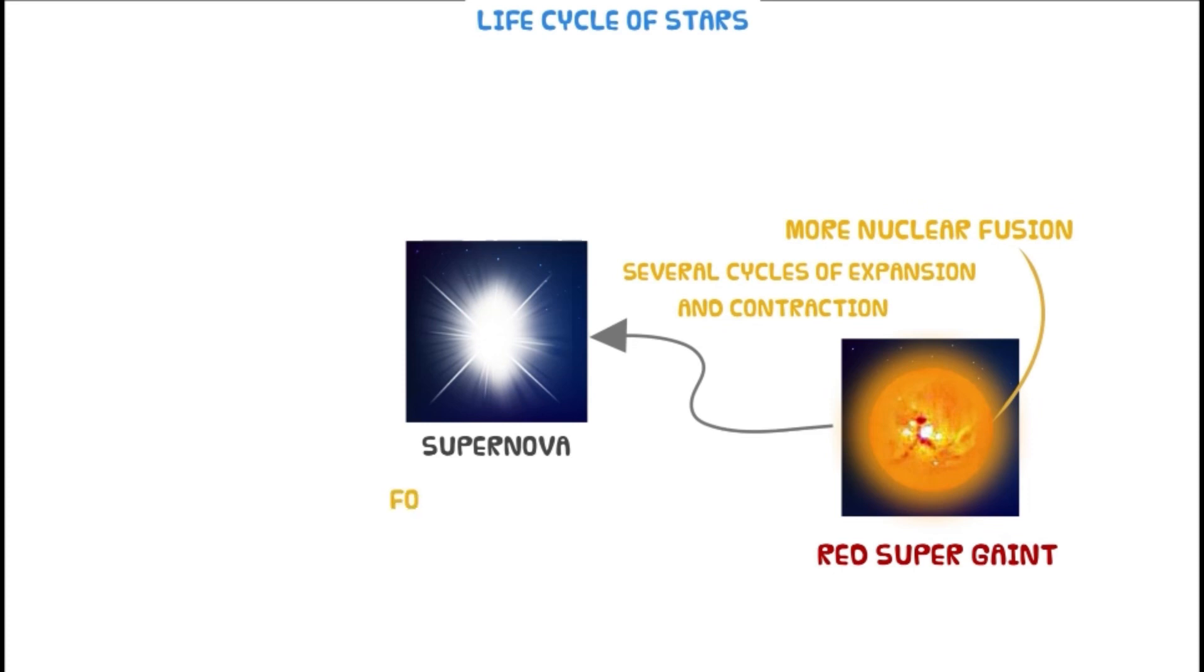After that, it will convert into a supernova and forms elements heavier than iron. This is because the red supergiant explodes.